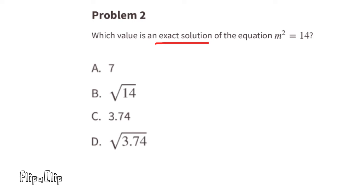Problem number 2: Which value is an exact solution of the equation m to the second power equals 14? Let's try 7. If m were 7, then m squared would be 49. Since 49 is not equal to 14, then 7 is not a solution of the equation m squared equals 14.